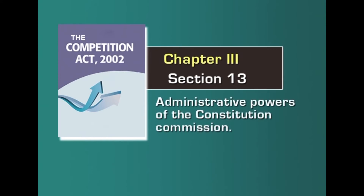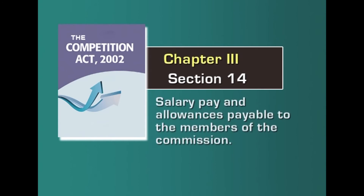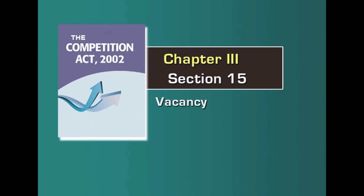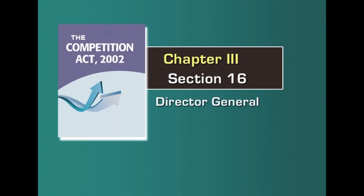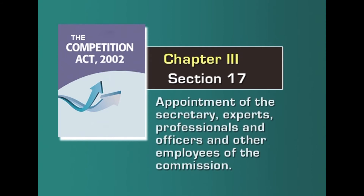Section 11 of Chapter 3 talks about resignation, removal and suspension of the chairperson and other members. Section 12 deals with restriction on employment of chairperson and other members in certain cases. Section 13 talks about administrative powers of the Commission. Section 14 lays down the salary and allowances payable to members. Section 15 talks about vacancy. Section 16 talks about the Director General. Section 17 talks about appointment of the secretary, experts, professionals, officers and other employees of the Commission.